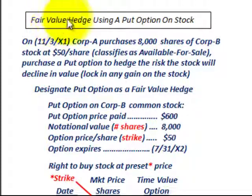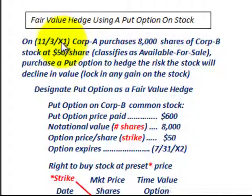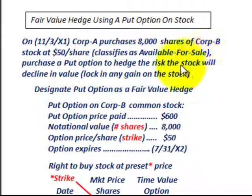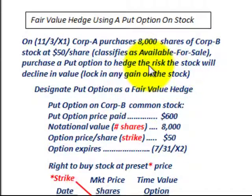What we're going to be going over here is a fair value hedge using a put option on some stock. On 11/3/X1, Corporation A purchases 8,000 shares of Corporation B stock for $50 per share, classified as available for sale. They purchase a put option on this stock to hedge the risk that the stock will decline in value, wanting to lock in any gain on the stock purchased at $50 per share.